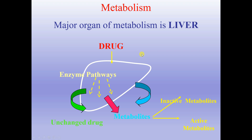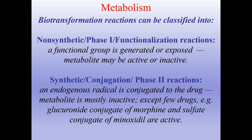On this slide you can see the schematic representation of the liver as the major organ of metabolism. Transformation reactions can be classified into non-synthetic phase 1 functionalization reactions — where a functional group is generated or exposed and the metabolite may be active or inactive — and synthetic conjugation phase 2 reactions — where an endogenous radical is conjugated to the drug and the metabolite is mostly inactive, except for few drugs. Here is the schematic representation of phase 1 and phase 2.